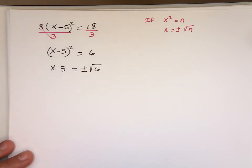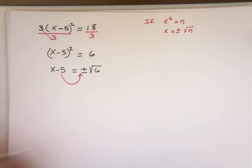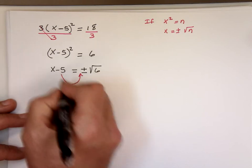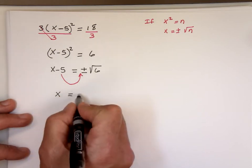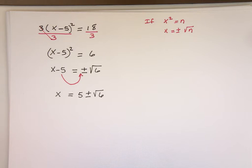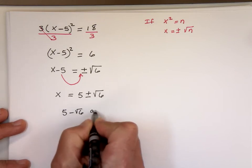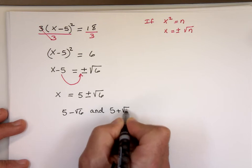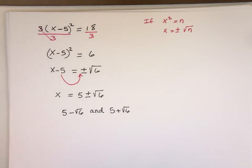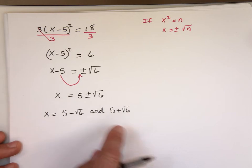To solve for x, I move the minus 5 to the other side — when you change side, you change sign — so x equals 5 plus or minus the square root of 6. Two solutions: the first is 5 minus the square root of 6, and the second is 5 plus the square root of 6.